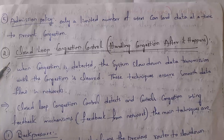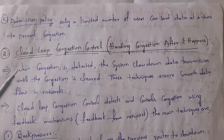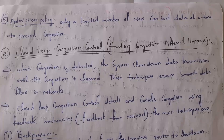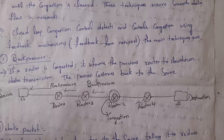Next I will explain what is closed loop congestion control. Closed loop congestion control is nothing but handling congestion after it happens. When congestion occurs, computers will slow down the data transmission until congestion is cleared. This technique will make sure that data flows smoothly in the network. Closed loop congestion control will detect and control congestion using feedback mechanisms.